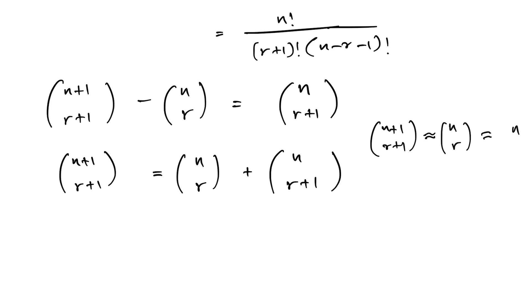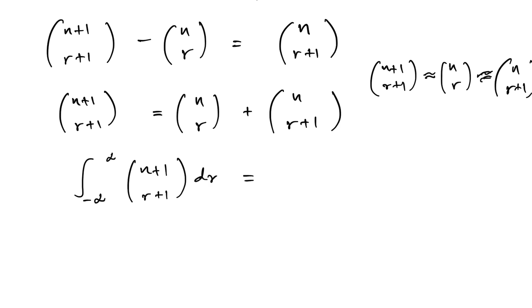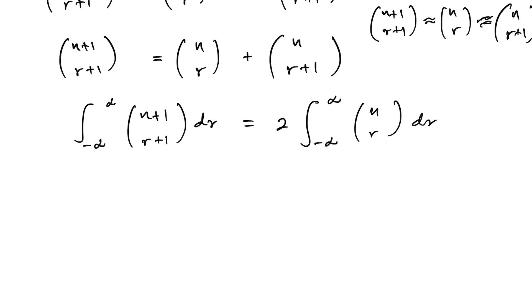The integral of n choose r+1 dr equals 2 times the integral from minus infinity to infinity of n choose r dr. If we call this integral J_n, then we have J_{n+1} equals 2 times J_n.